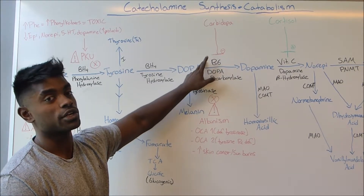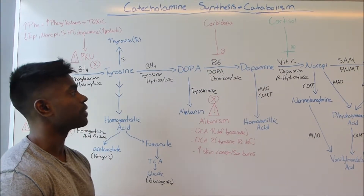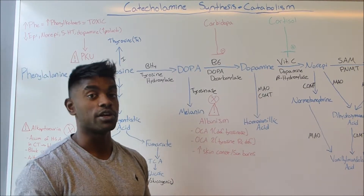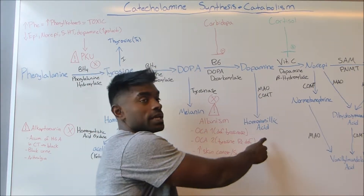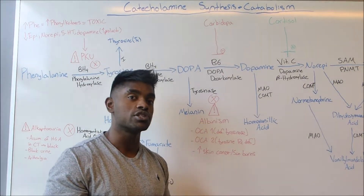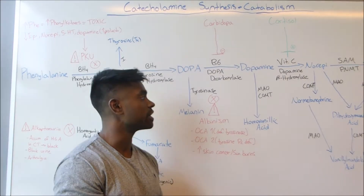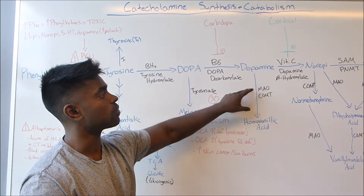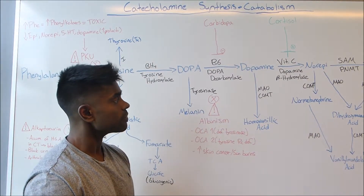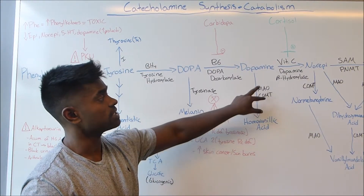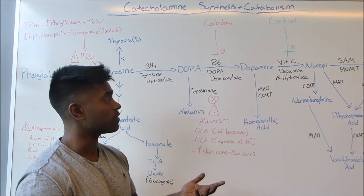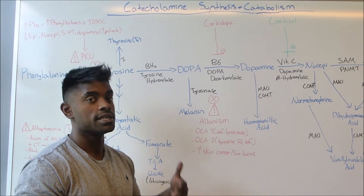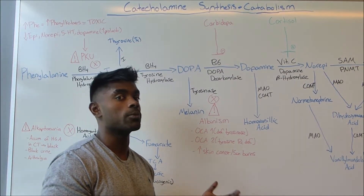This conversion uses cofactor B6, which is also important. Dopamine can be degraded into homovanillic acid, which is eventually going to be excreted into the urine using monoamine oxidase (MAO) or COMT. These can occur in reverse as well — either MAO followed by COMT, or COMT followed by MAO.